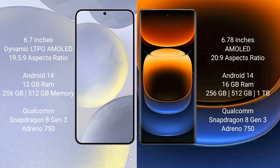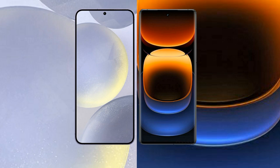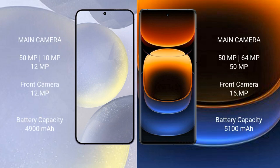The Samsung Galaxy S24 Plus comes with 12GB RAM and 256GB or 512GB internal storage, powered by the Qualcomm Snapdragon 8 Gen 3 processor. The Vivo iQOO 12 Pro comes with 16GB RAM and 256GB, 512GB, or 1TB internal storage, also powered by the Qualcomm Snapdragon 8 Gen 3 processor.